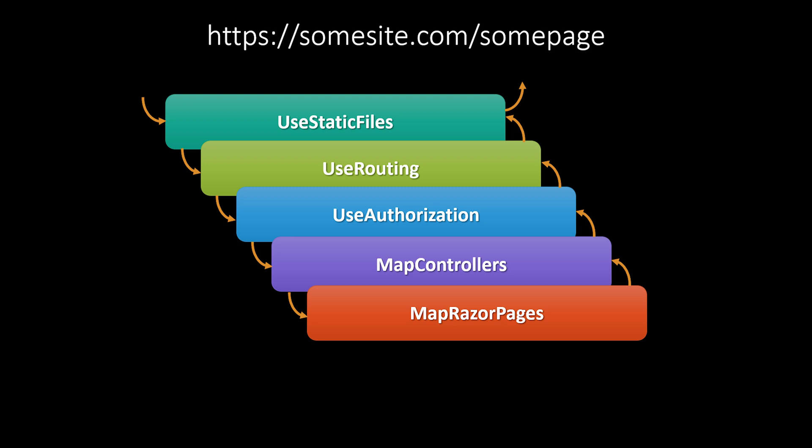What's important to realize here is that each of these pieces of middleware doesn't know about each other. It just knows that it can call the next person in the chain. It has an opportunity before it calls the next piece of middleware to do some work, and to do some work after the call to the next piece of middleware returns.